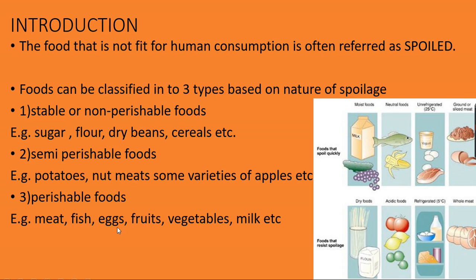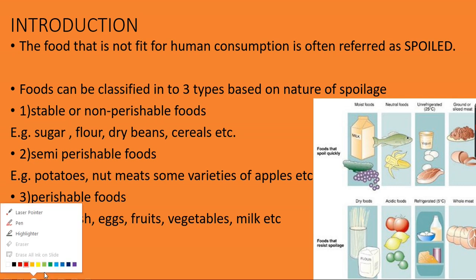Meat, fish, eggs, fruits, vegetables, and milk all come under perishable foods. Foods that spoil quickly are called perishable foods, and the ones that resist immediate spoilage are called stable or non-perishable foods.